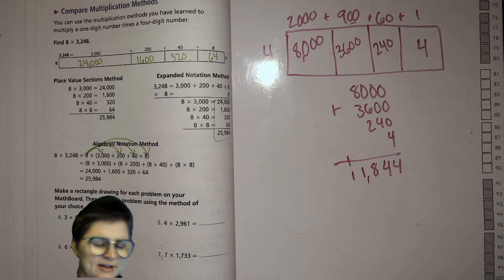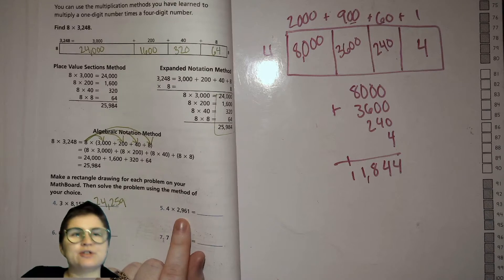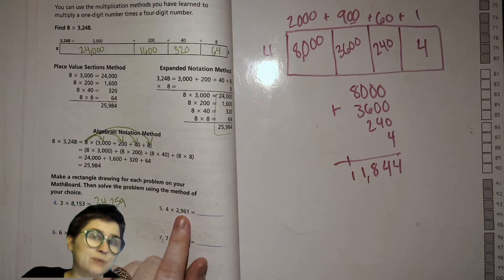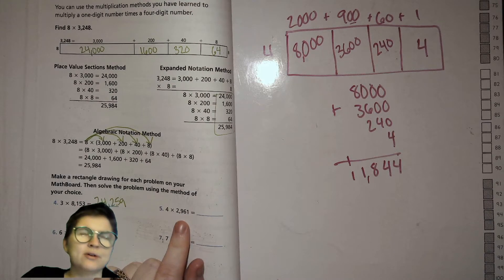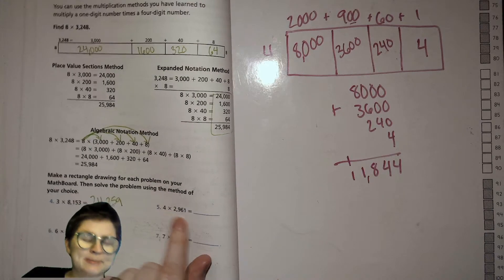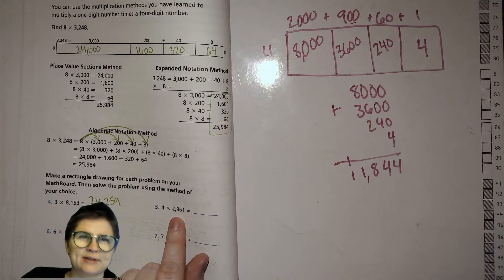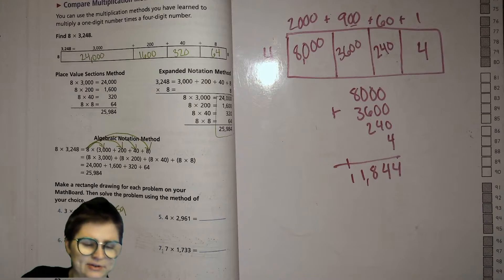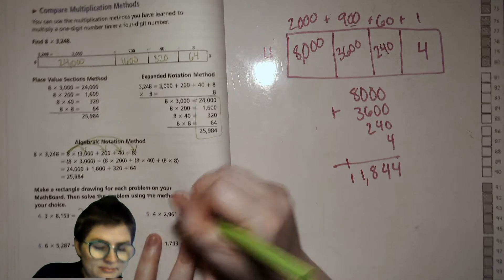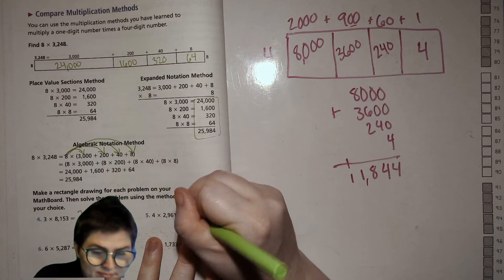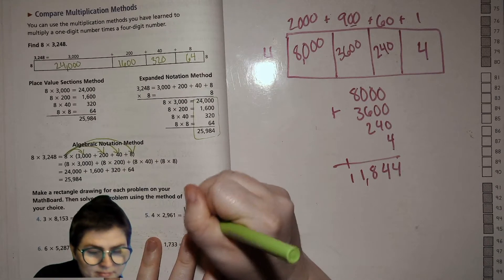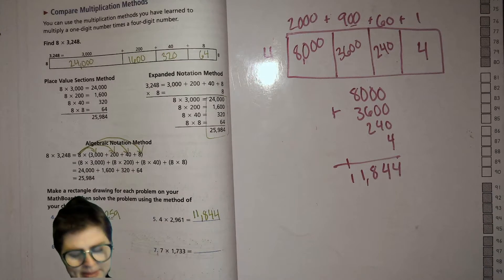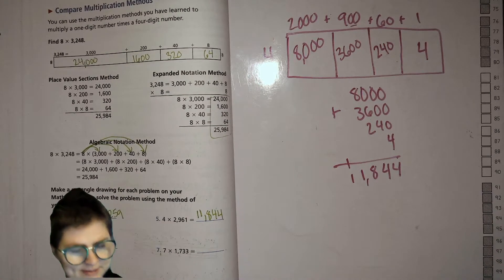And if you think about it, this number 2,961 is super close to 3,000. So would it make sense for 4 times almost 3,000 to be almost 12,000? I think so. It's always important that you're paying attention and thinking about reasonableness like that.